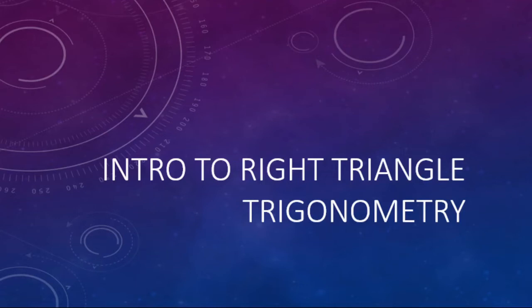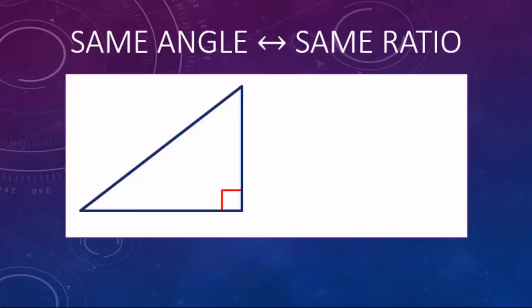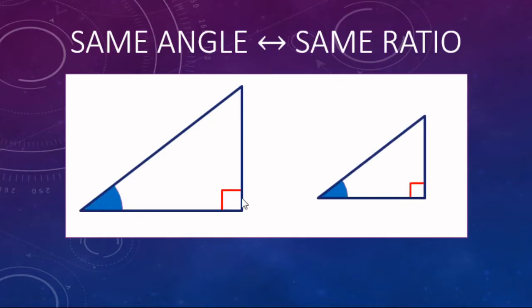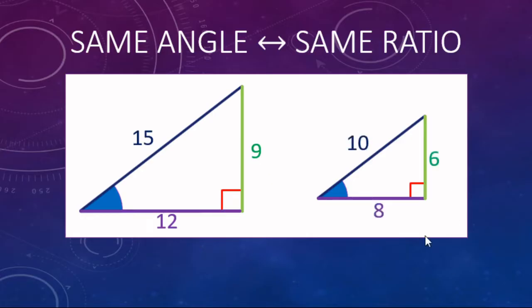In this video we are going to be looking at an introduction to right triangle trigonometry. The reason why right triangle trig works is because when you have similar triangles and you're referencing the same angle on both, they have the same ratio for the side measures. We have two similar triangles here - one with sides 9, 12, and 15, and another with sides 6, 8, and 10. The ratio of 9 to 12 and 6 to 8 is the same: 0.75. And 12 to 15 and 8 to 10 are both 0.8. So it works on any size triangle as long as this angle is the same.